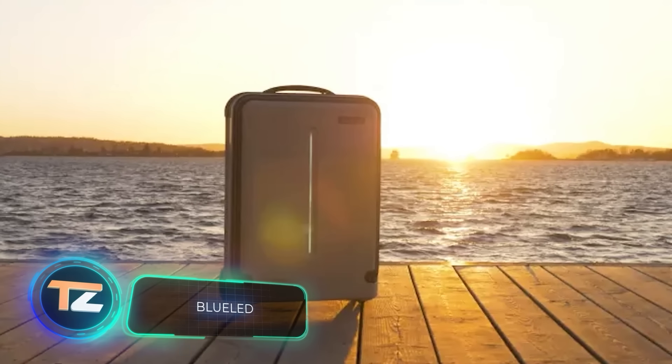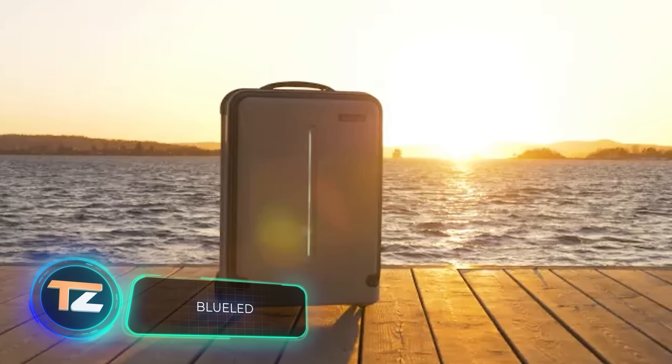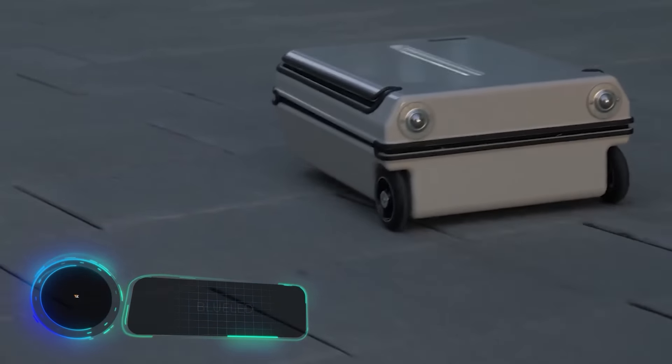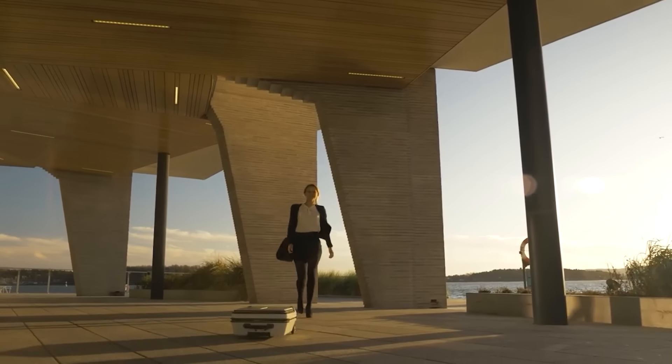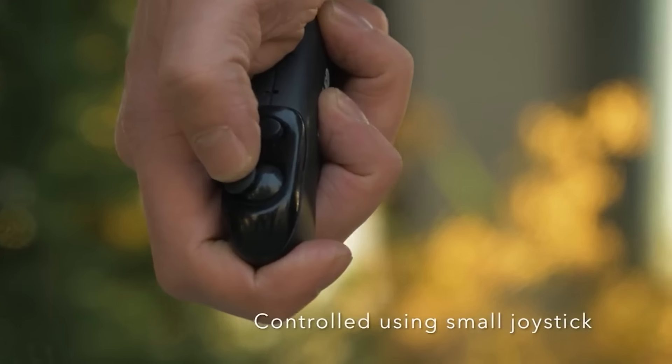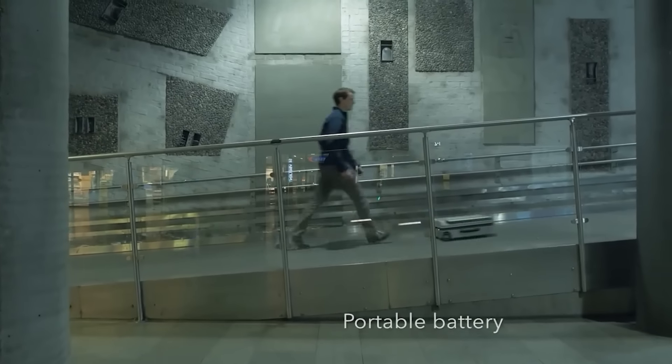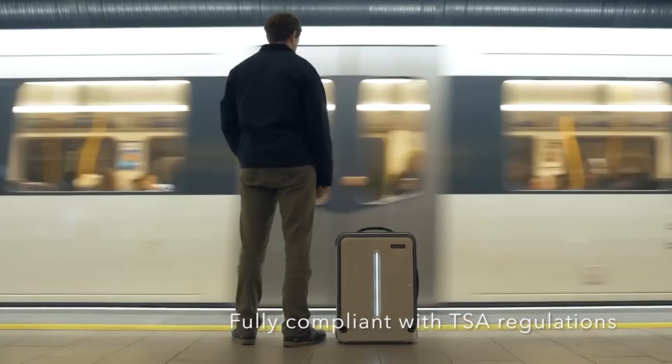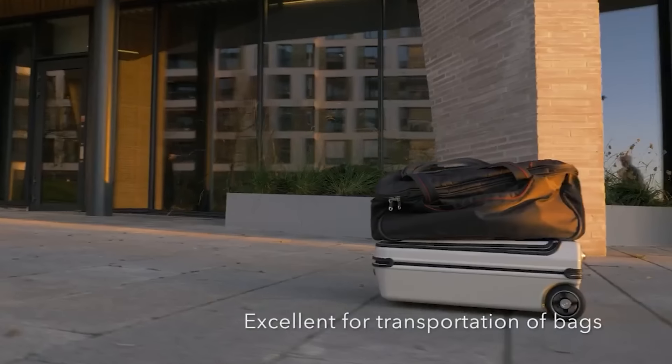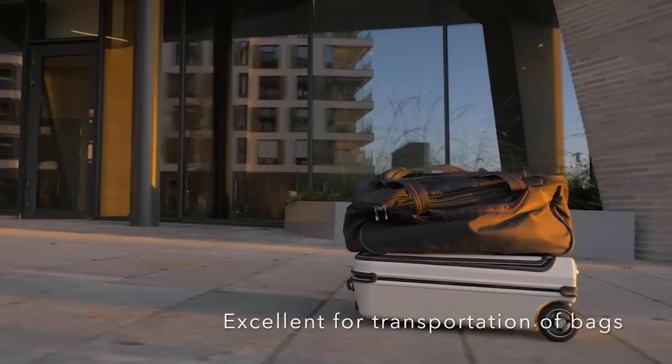What do you get when you cross a suitcase and an RC toy car? Blue LED, of course. This is the world's first smart suitcase with a joystick controller. This solution will certainly suit those who'd like to travel in groups. You can put your bags and the backpacks of your friends on the suitcase, rolling next to them.